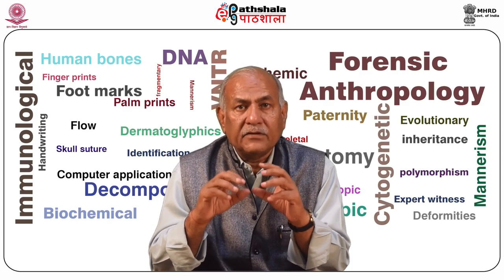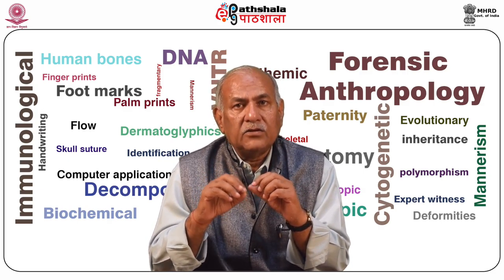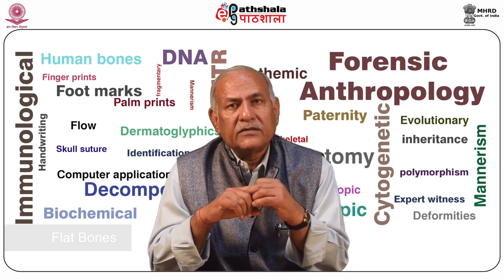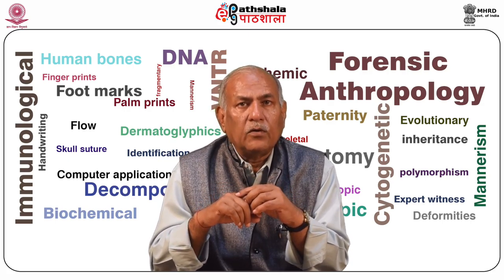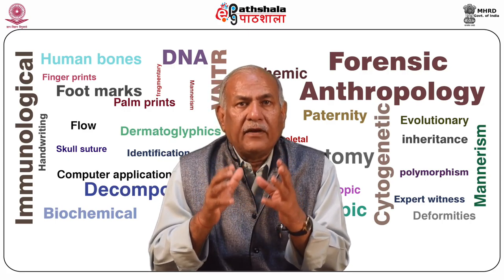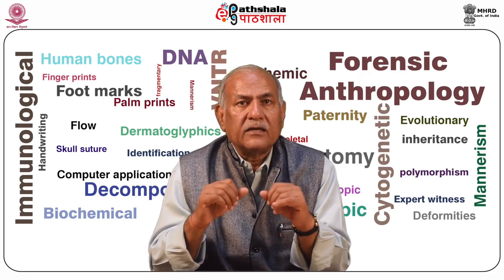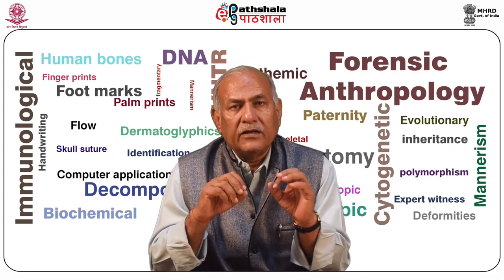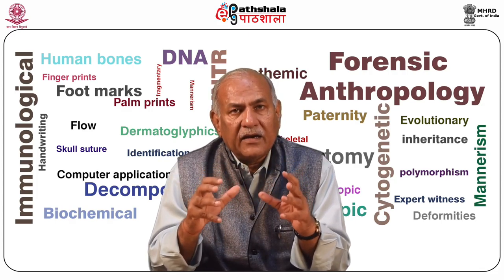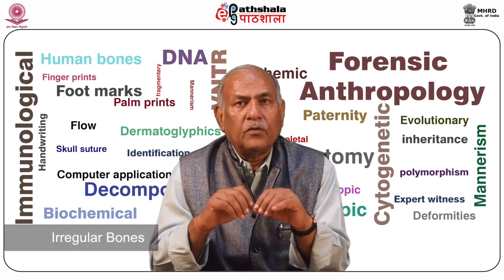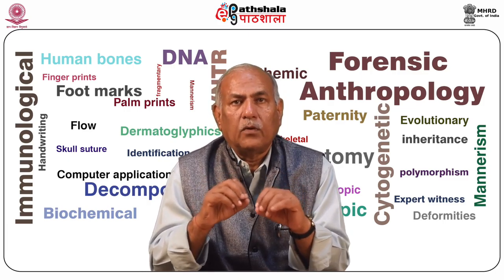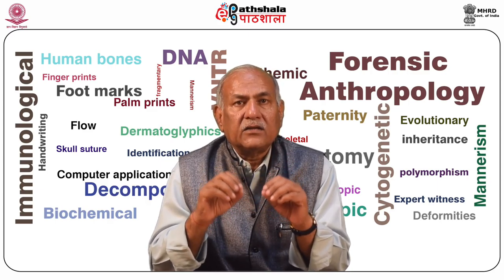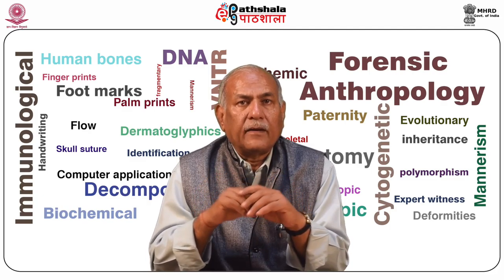Long bones are, as the name suggests, longer in length and also tend to be slightly curved — for example, the femur. Flat bones such as the ribs and breastbone can be described as being fairly flat and plate-like. Sesamoid bones refer to small bones embedded in a tendon, often found in joints such as the knees and wrist. Finally, irregular bones refer to a certain class of bones that do not belong in the other categories, such as the bones composing the spine.